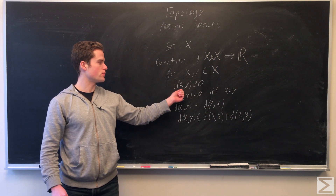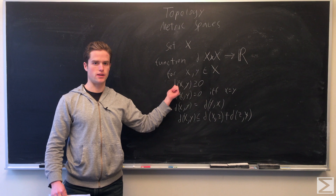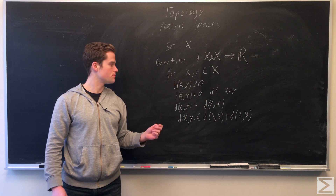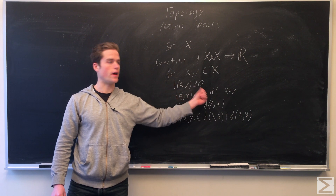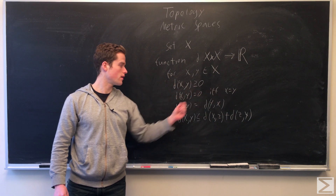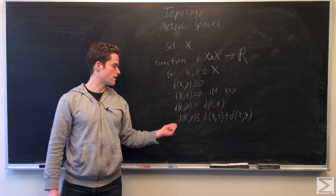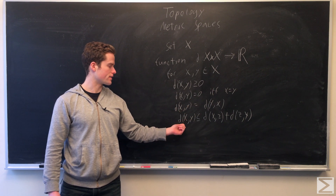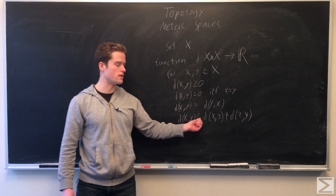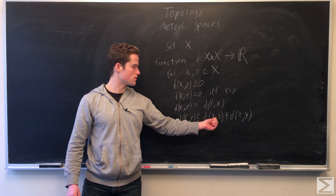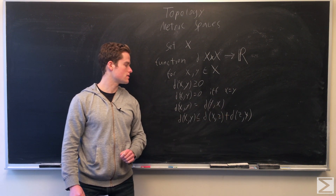The axioms are: first, d(x, y) is greater than or equal to zero for all x, y in X. Second, d(x, y) equals zero if and only if x equals y. Third, d(x, y) equals d(y, x) — symmetry. Fourth, d(x, y) is less than or equal to d(x, z) plus d(z, y) for any z in X — the triangle inequality.